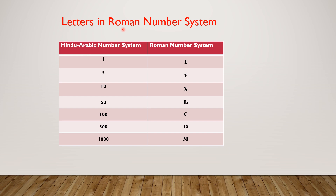Letters in the Roman Numbers System. Just as we have digits in the Hindu-Arabic Numbers System, the Roman Numbers System consists of letters. There are seven letters in the Roman Numbers System.